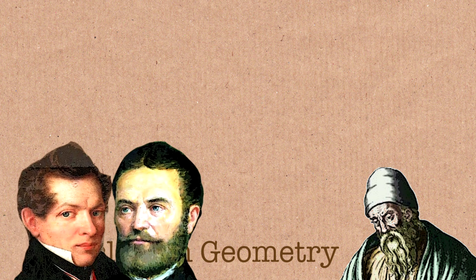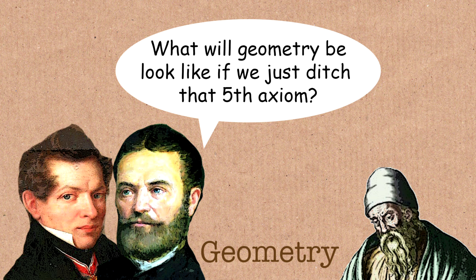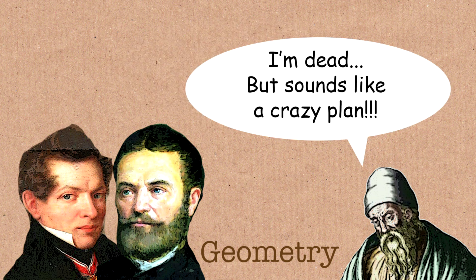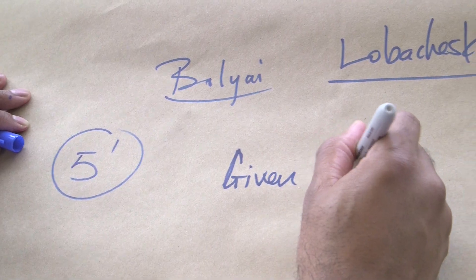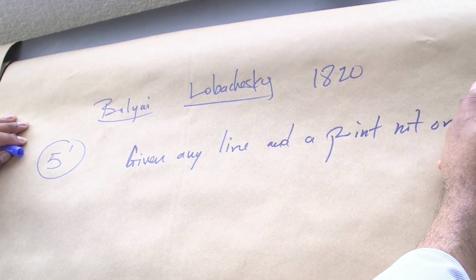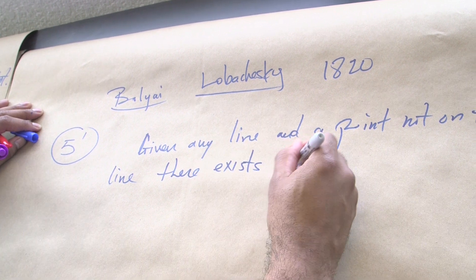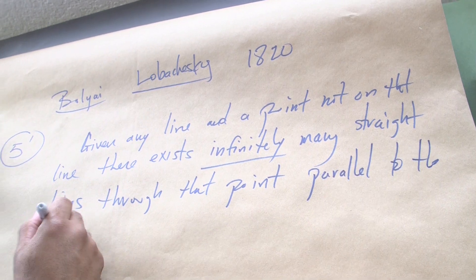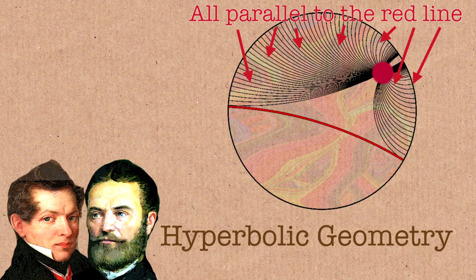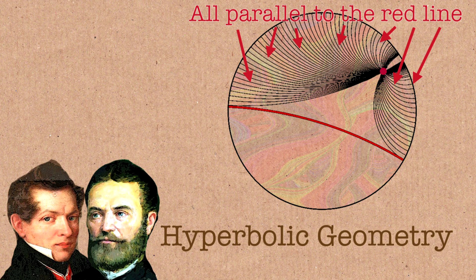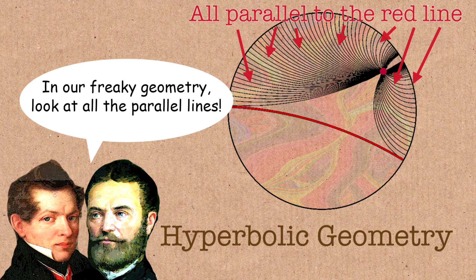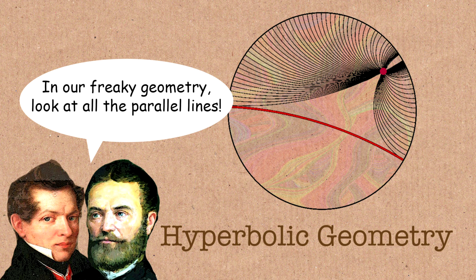In 1820 to 1830, independently, two mathematicians — a Hungarian, Bolyai, and a Russian, Lobachevsky — independently discovered what we now call hyperbolic geometry. The fifth axiom, so we can write maybe five prime, can be stated like this: given any line and a point not on that line, there exists infinitely many straight lines through that point parallel to the given line — parallel meaning not intersecting. A moment ago we drew something that showed there was only one parallel line, and now you're saying there are infinitely many. That's right. So this new world is the hyperbolic plane which they created — out of nothing, I have created an entire world.